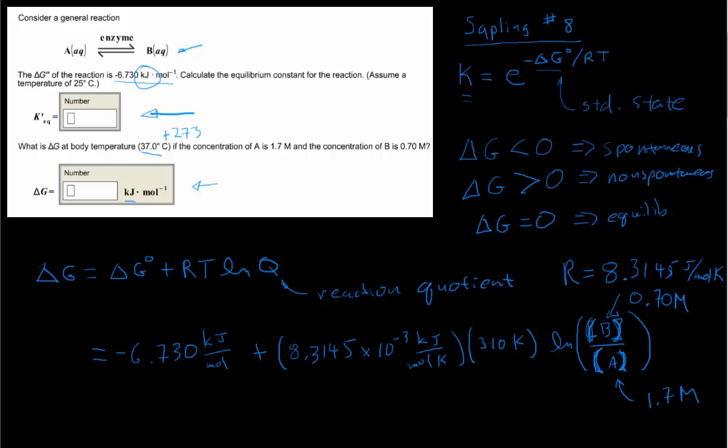And so everything on the right hand side of this equation are numbers. We could plug in those numbers and calculate the value of delta G in units of kilojoules per mole, because the Kelvins will cancel. This has kilojoules per mole which we're adding to something that has units of kilojoules per mole. So that's how we work the second part of question 8.